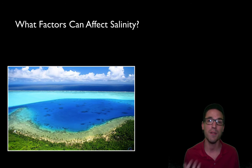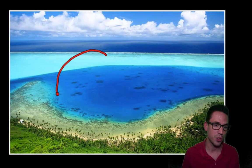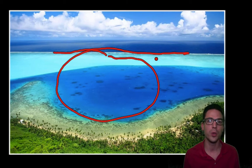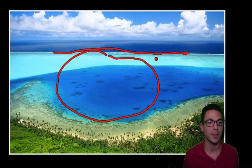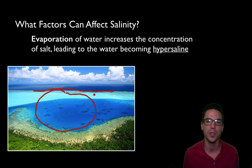Different factors can either increase or decrease that number. One of them is evaporation. In this picture we have a lagoon — a body of water cut off from the rest of the ocean, perhaps separated by a coral reef. As water in the lagoon heats up it evaporates, but it leaves the salts behind, so the salinity increases. Evaporation increases the concentration of salt, leading to what we call hypersaline water — above the typical salinity of 35 parts per thousand.